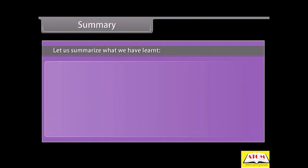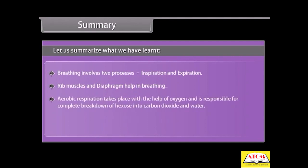Let us summarize what we have learned. Breathing involves two processes: inspiration and expiration. Rib muscles and diaphragm help in breathing. Aerobic respiration takes place with the help of oxygen and is responsible for complete breakdown of hexose into carbon dioxide and water. Anaerobic respiration is incomplete breakdown of substrate in the absence of oxygen.